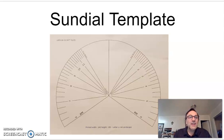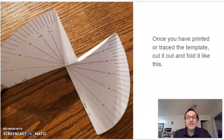So we have our sundial template. Once you have that, you're going to want to cut it out and you're going to make a couple of folds. Fold it in half here, and then you want to fold these two sides out just like that.